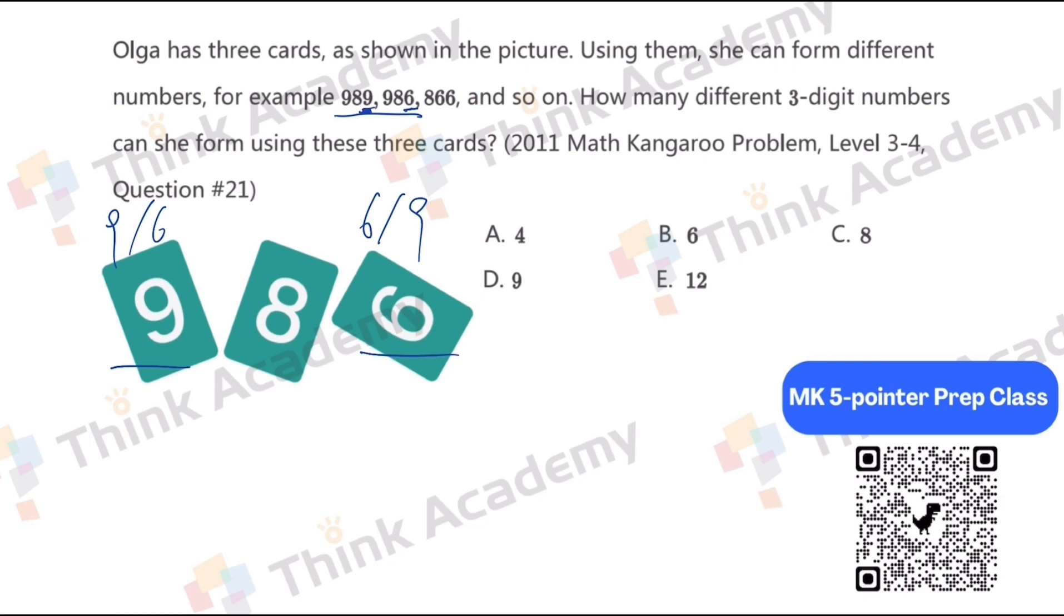But the card 8 can only be 8. So let's assume the three-digit number is the square as the 100th place and the triangle as the 10th place and the circle as the 1st place. So for the 100th place, how many options are there? Yes, 3. Because they are 6, 8, or 9.